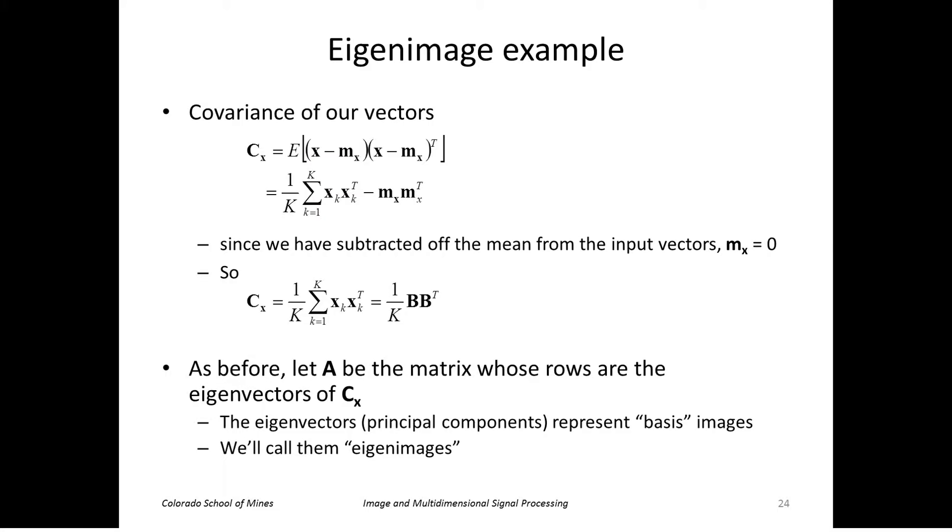So as before, we'll let A be the matrix whose rows are the eigenvectors of our covariance matrix, and in this case the eigenvectors represent basis images and we'll call them eigenimages.